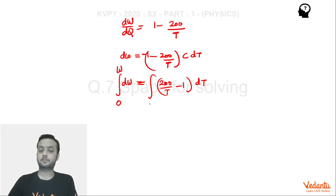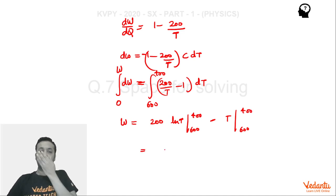As the hot body moves from 600 till 400, on the left hand side W will come. Integral 200 by T dT, integral will be 200 ln T in the limit 600 to 400, minus integral dT will be T in this limit 600 to 400. So we are getting 200 ln of 2 by 3 minus minus 200.